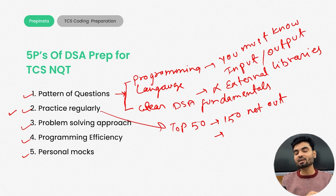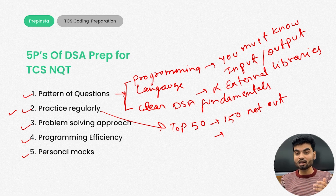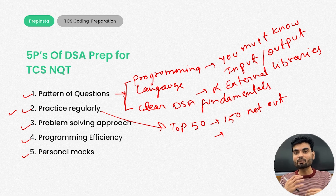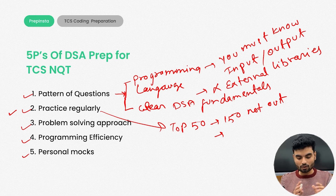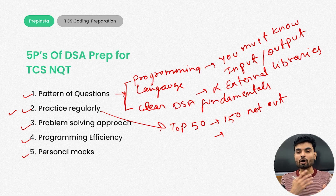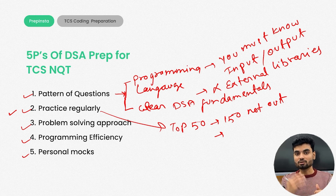Now the fourth P — programming efficiency — and a very important one. Once you've cleared your programming fundamentals, cleared your DSA fundamentals, you know the data structures, and you've been regularly practicing from the 50 questions provided in that video plus previous year papers and the 150 not-out questions — now think about how you can reduce bugs, reduce errors, and think more directly about the optimized approach.